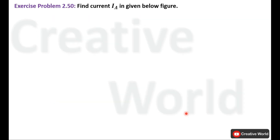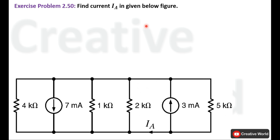Exercise problem number 2.50: find current Ia in the given figure. This is the circuit diagram of the given problem. We have to find the value of current Ia inside this branch. This problem can be solved using different techniques, but we will adopt current divider rule to solve this problem because it is the easiest technique to apply.